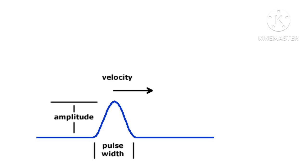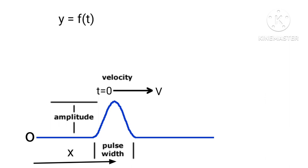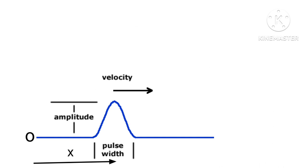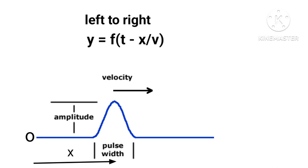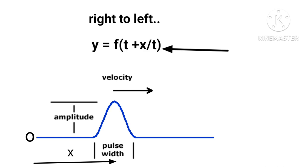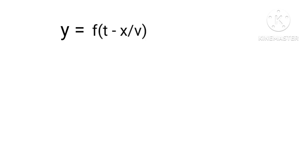Let a single wave pulse be at a distance x from the origin, moving with speed v towards the right. At t = 0, we define the wave pulse as y = f(t). Since v = x/t, we get t = x/v. Hence at the origin x = 0 at time t = x/v. Therefore at the origin O, y = f(t - x/v). When the wave moves from left to right, y = f(t - x/v), and from right to left, y = f(t + x/v).